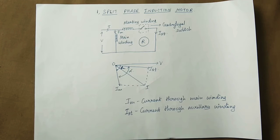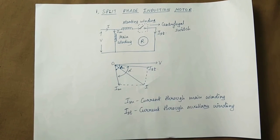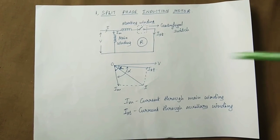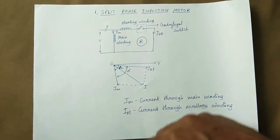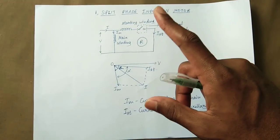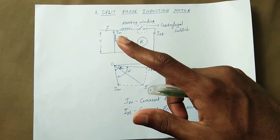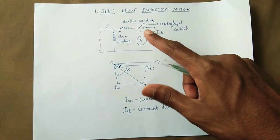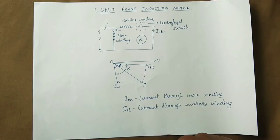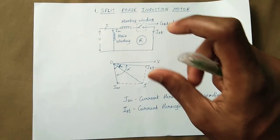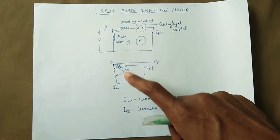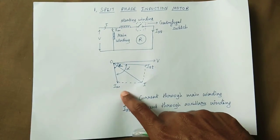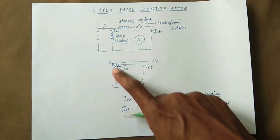First, we have the split-phase induction motor. There are two windings: main winding and starting winding. The main winding is the stator winding. This is the main current and the starting current. There is also a centrifugal switch, and this is the rotor. If you apply voltage, it will change the main flux current.